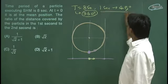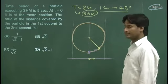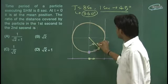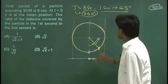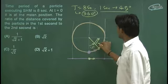Ab wo ye keh raha hai ki ek second me 45 degree chalta hai. To 1 second me particle yaha aa jayega. First second me. Or next second me particle yaha aa jayega. Again 45 degree. Ye 45 degree or ye 45 degree.